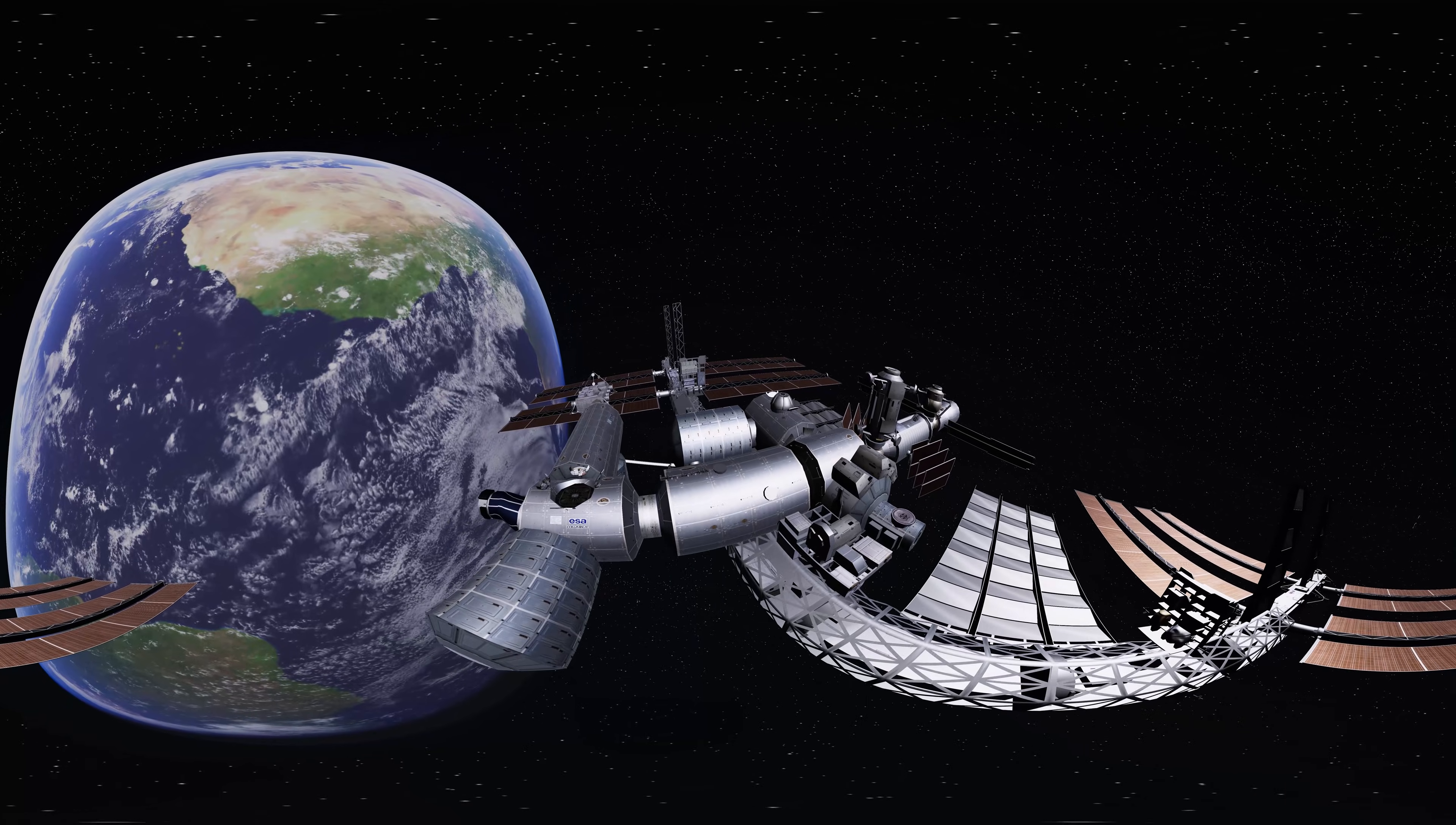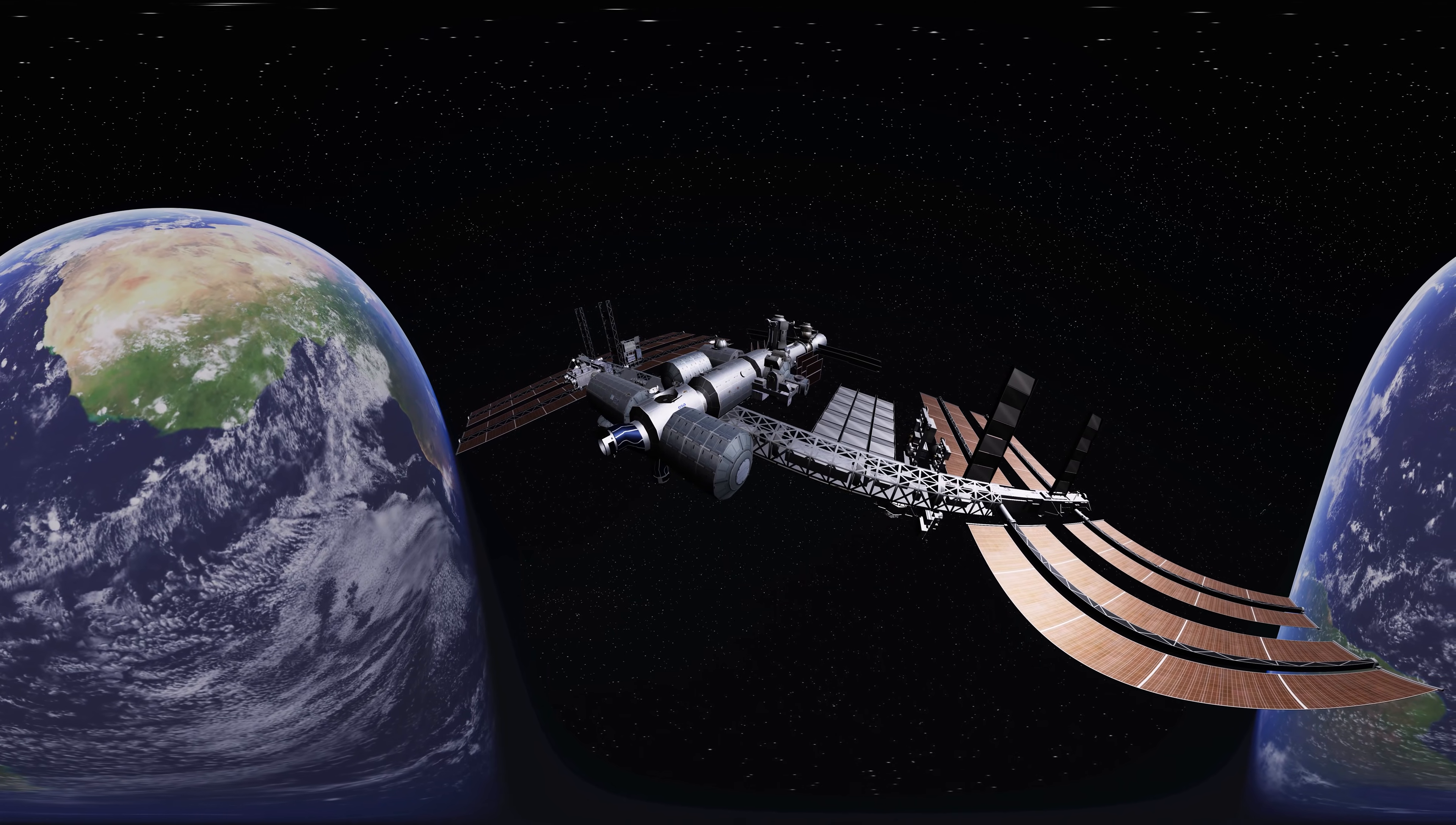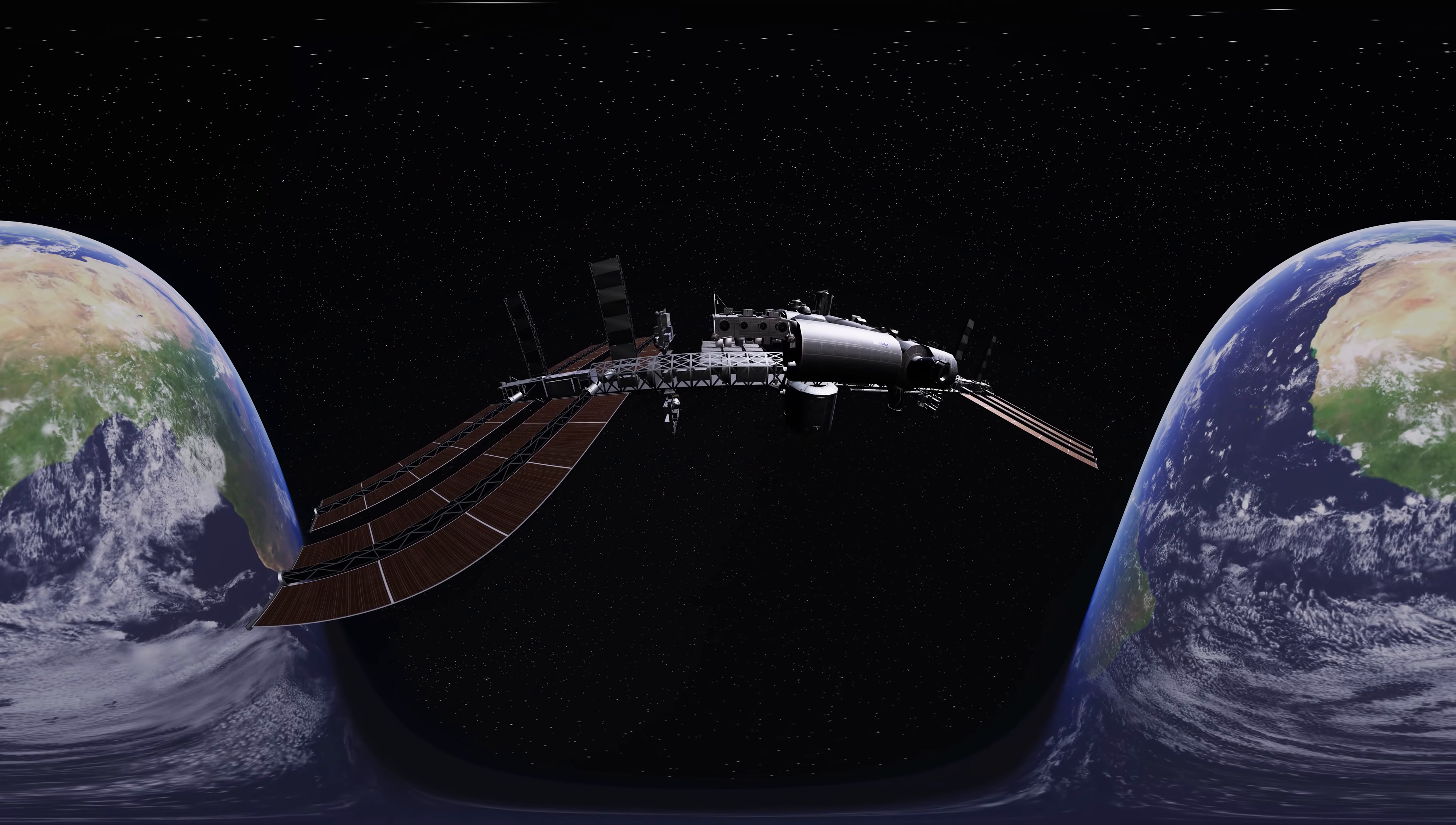Before anyone came to live on the station, it had to be brought into orbit. The structure of ISS weighs 460 tons, as much as 300 cars. Due to its mass and size, the station couldn't be built and launched into orbit in one go. It was brought to orbit in pieces and assembled like Lego blocks.